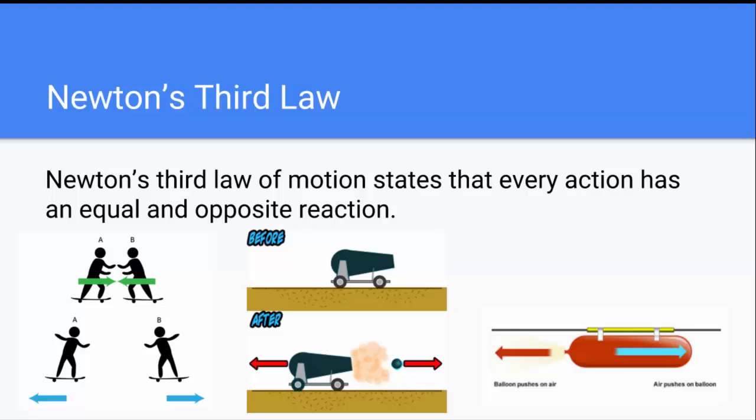And in the picture of the cannon, the projectile is pushed forward out the cannon front, and the cannon is pushed backwards. The balloon is pushing against the air, which makes the balloon go forward.